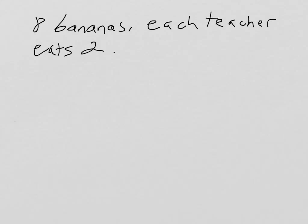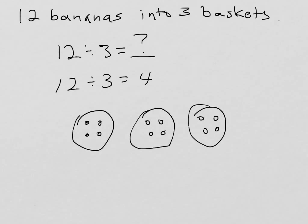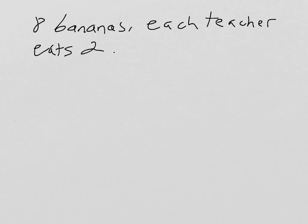The second way to think about division is where we know how big the groups are. In this last problem, we knew how many groups we were making, but not how big they were going to be. Here, we have a problem where we have eight bananas and each teacher eats two. So we know that the size of each group is going to be two. So we are going to be looking at division slightly different here because we're saying eight divided by two. And then we'll find how many groups that can make.